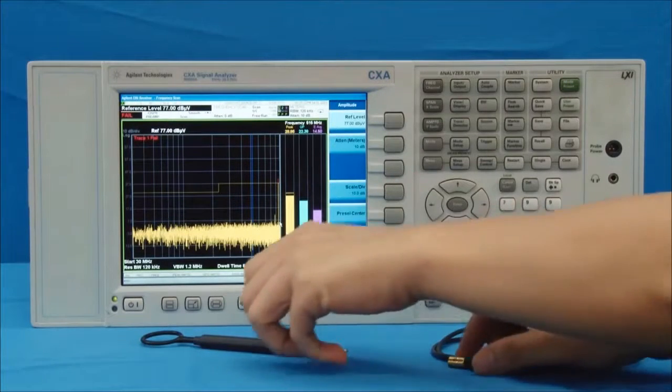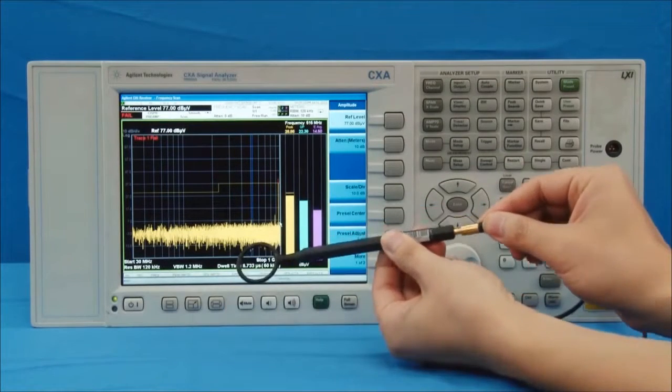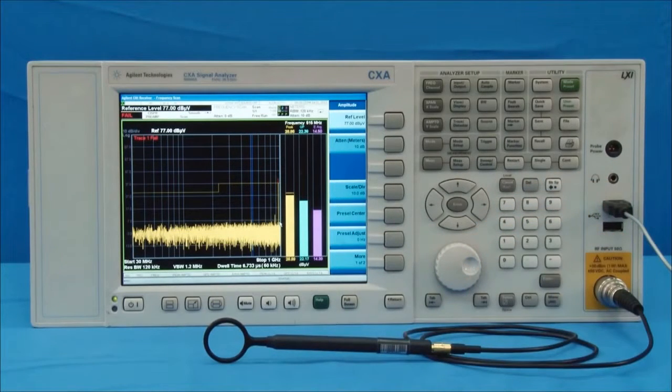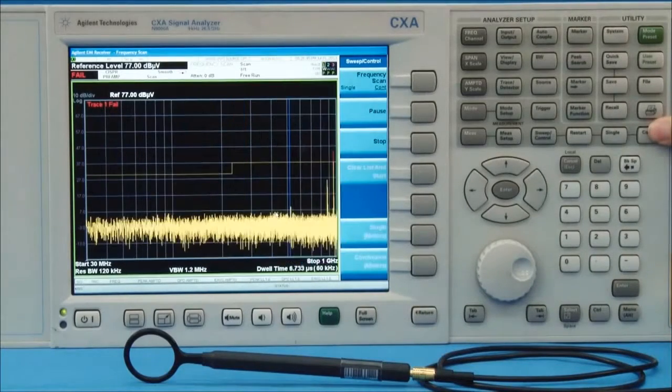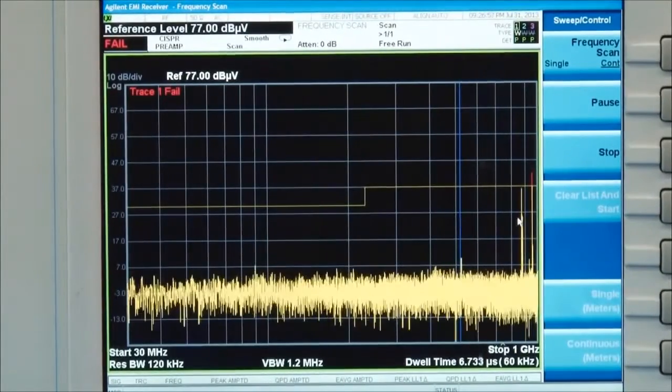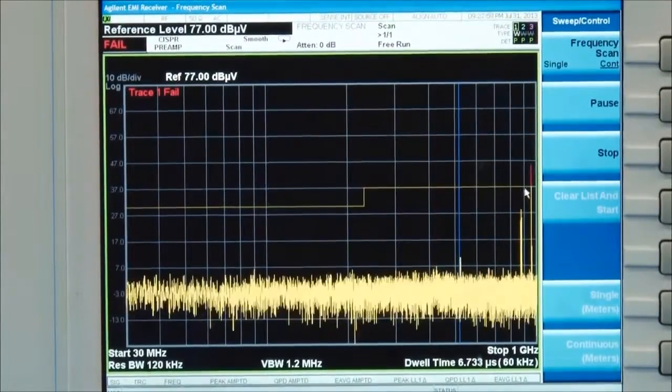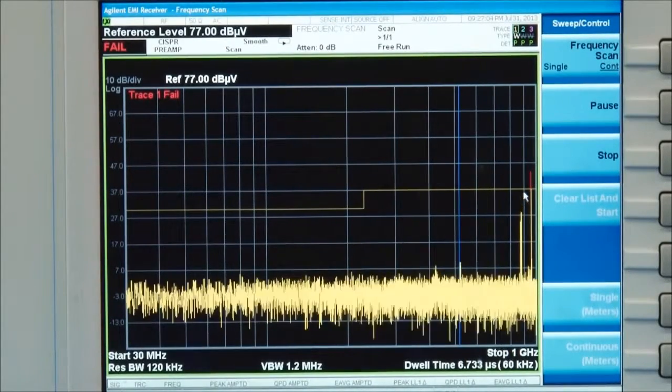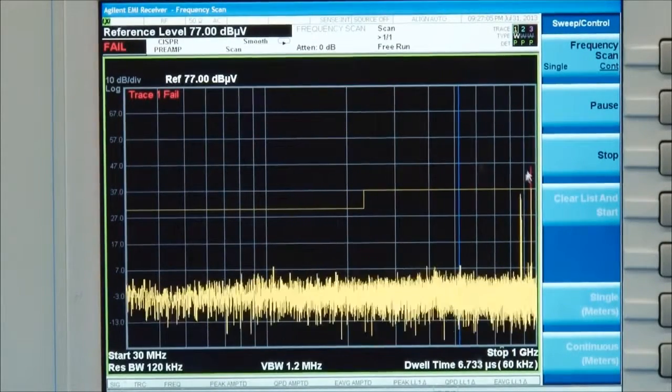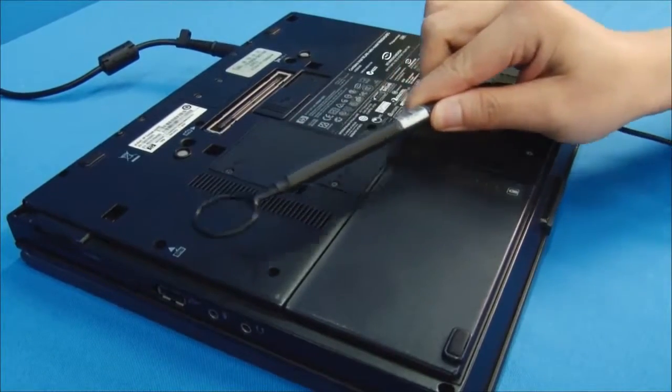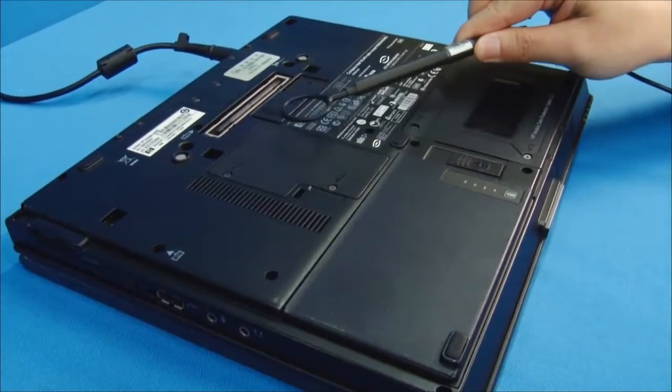Once the spectrum analyzer settings have been selected, we connect the probes. We begin using probe number 1, which has the best sensitivity, to obtain the suspicious signal. The display shows that there are two obvious signals around 800 MHz to 900 MHz, even though we haven't placed the probe close to the laptop. These are cellular signals which we'll ignore in our testing as they are not generated by the DUT.